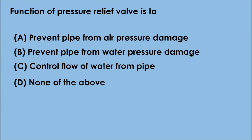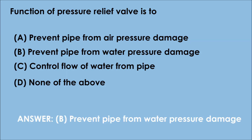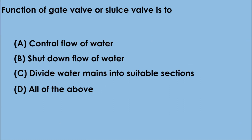Question 2. The function of a pressure relief valve is to: A. Prevent pipe from air pressure damage, B. Prevent pipe from water pressure damage, C. Control flow of water from pipe, D. None of the above. The correct answer is option B — the function of a pressure relief valve is to prevent pipe from water pressure damage.